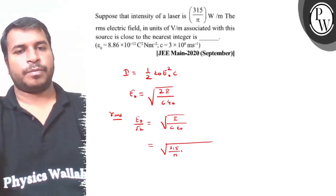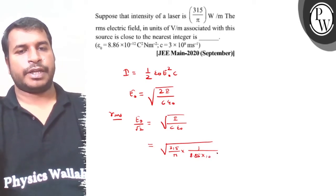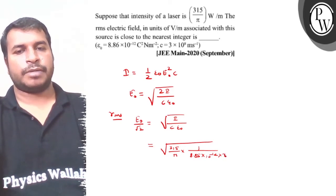The value of I naught by root 2. Now, I have 0.5 upon pi into 1 upon 8.85 into 10 to the minus 12 into epsilon naught. C value is 3 into 10 to the 8, so if we solve it,